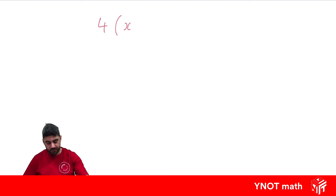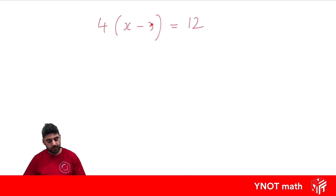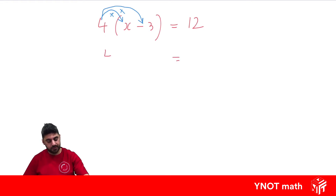Let's have a look at another one: 4 outside of x minus 3 equals 12. One important thing to remember is that the sign in front of the term goes with it, so this 3 is a negative 3. When we multiply, it's 4 times x, then 4 times negative 3. So 4 times x is 4x, and 4 times negative 3 gives us negative 12, and that equals 12. Now we just have a two-step equation to solve.